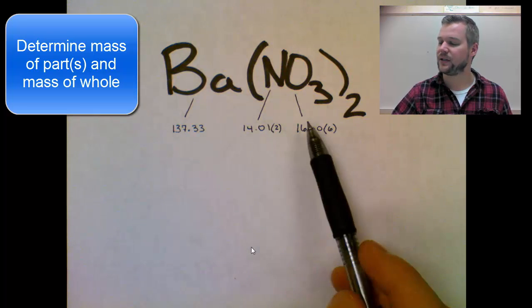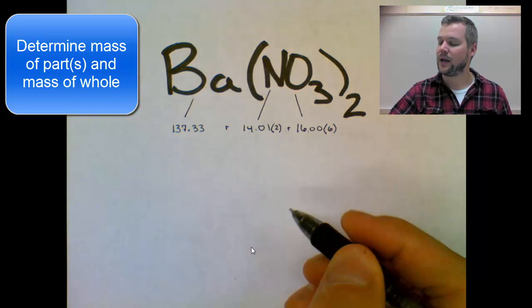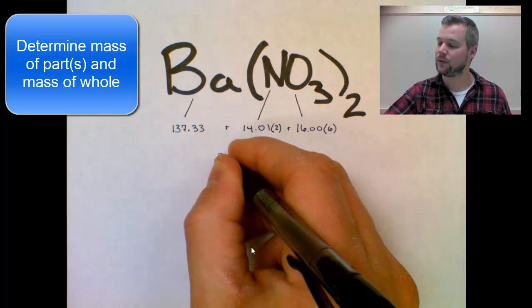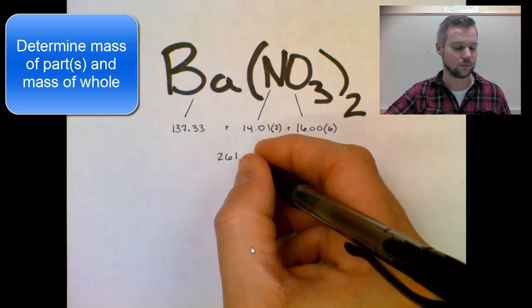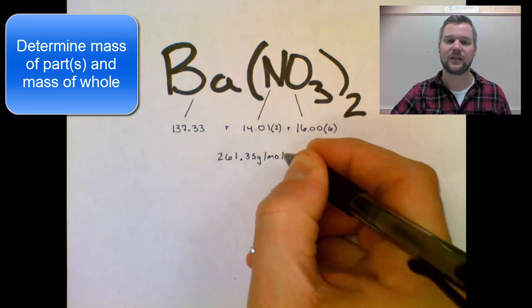So I need to add these all together to get the mass of the whole thing, and that means that this whole thing weighs 261.35 grams per mole. So that's the whole.